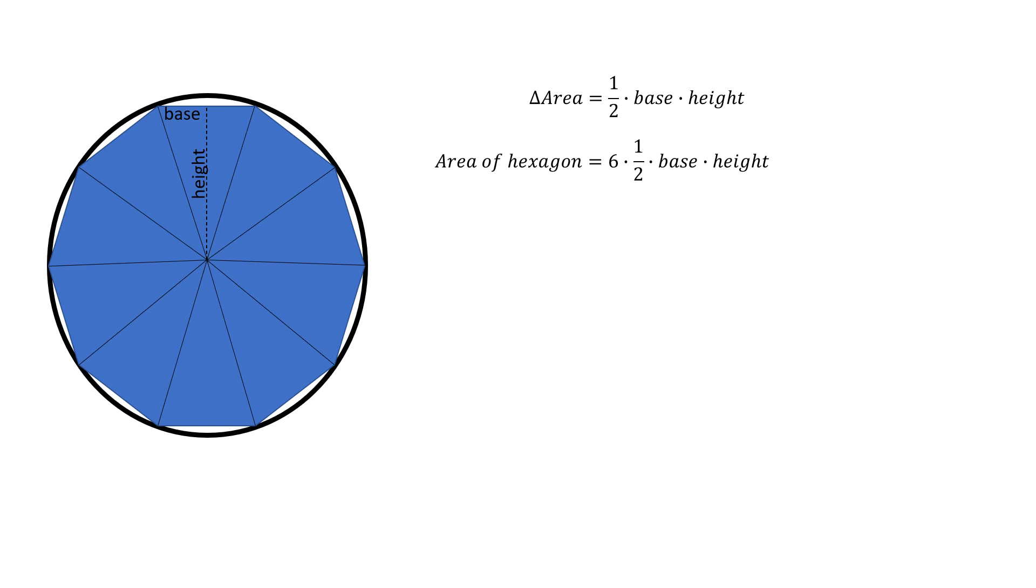But notice that we didn't find the area of the circle. We found the area of a hexagon. This time, I'm going to inscribe a bigger polygon. I'm going to inscribe a decagon inside the circle. Notice that there's less white space. There's still some white space, so we don't have the area of the circle, but we have the area of a bigger polygon. So instead, we have 10 triangles, with the base being the side and the height being from the middle to the side. So I'm going to change hexagon to decagon, and change the 6 to a 10, because now we have 10 triangles.